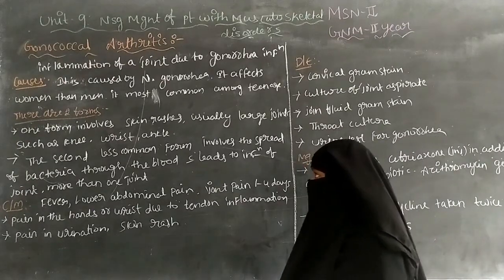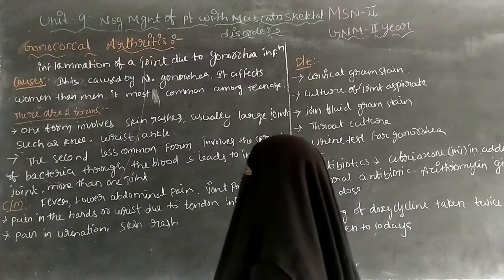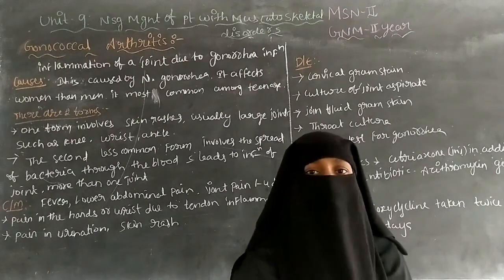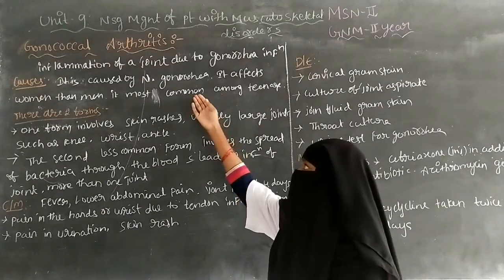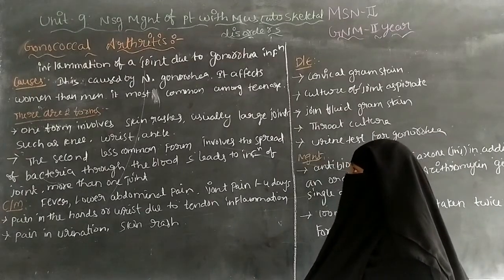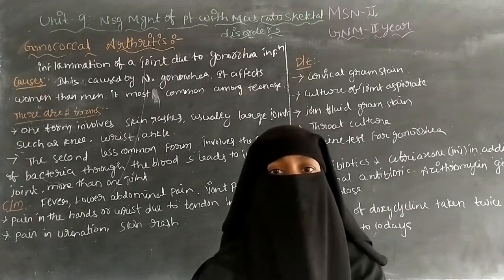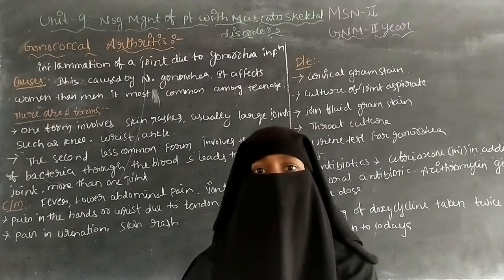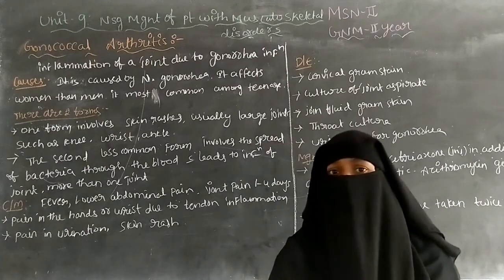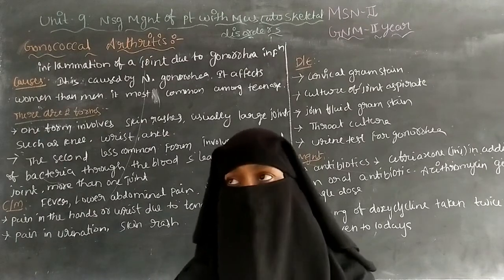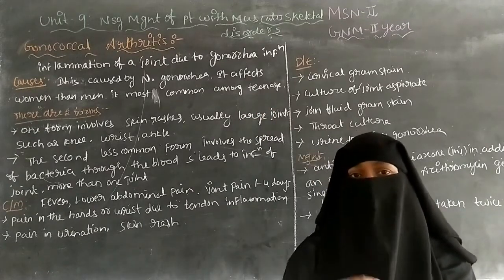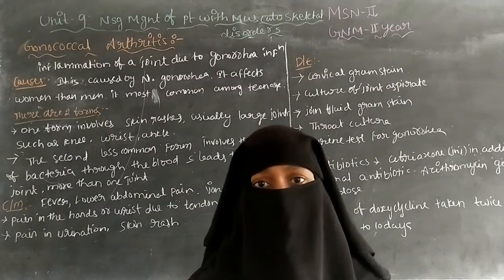The causes: gonococcal arthritis is caused by the bacterium Neisseria gonorrhea. It affects women more than men, and is most common among the teenage group, specifically ages 16 to 18 years.